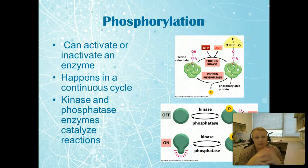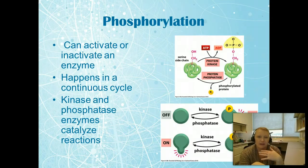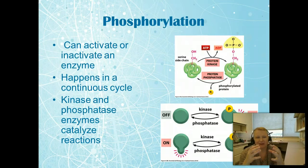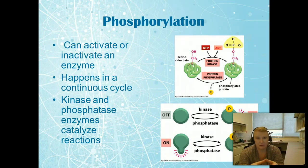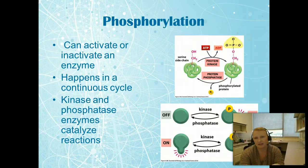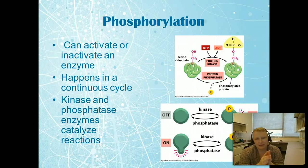Another way to turn enzymes on or off is phosphorylation. A phosphate group is chopped off from ATP and added to an enzyme or protein, turning it on or off. It's important to remember that adding the phosphate group doesn't always turn the protein on — sometimes it turns it off. To add the phosphate group we use an enzyme called protein kinase; to remove it, we use protein phosphatase. There are several types of kinases: serine, threonine, and tyrosine kinases are the main ones.